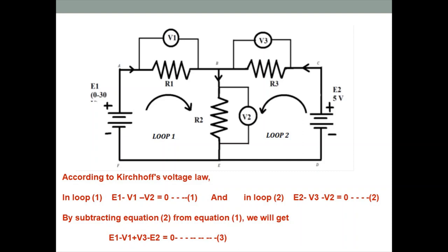So these two equations are formed for loop 1 and loop 2. To prove the Voltage Law, sign convention is the most important part — where and with which sign you represent each potential difference. If the first equation is subtracted from the second, the resulting third equation is: E1 − V1 + V3 − E2 = 0.